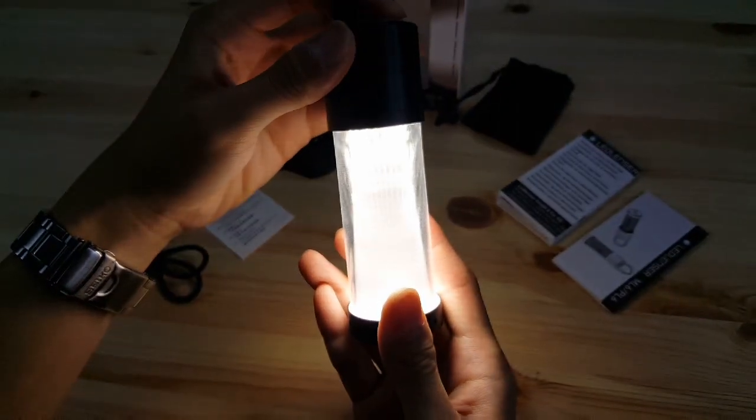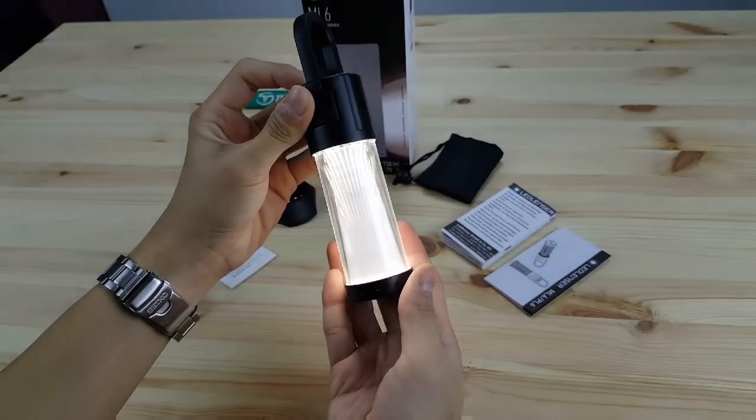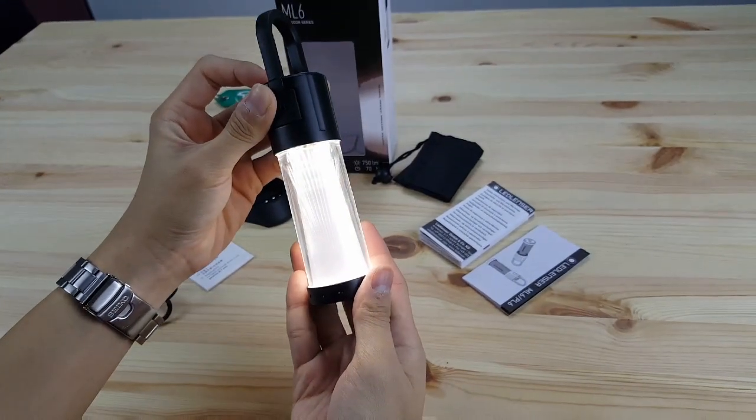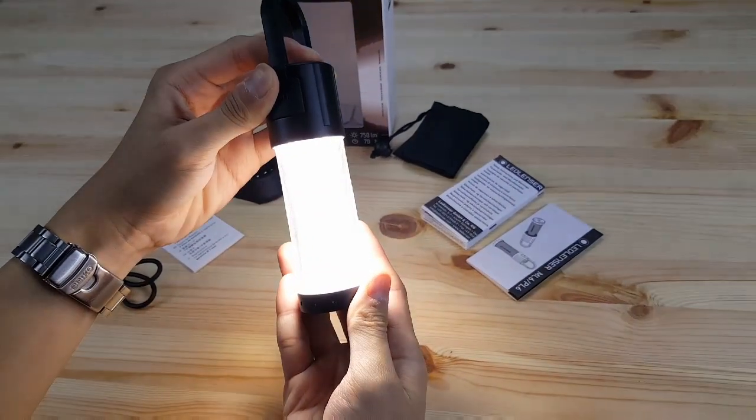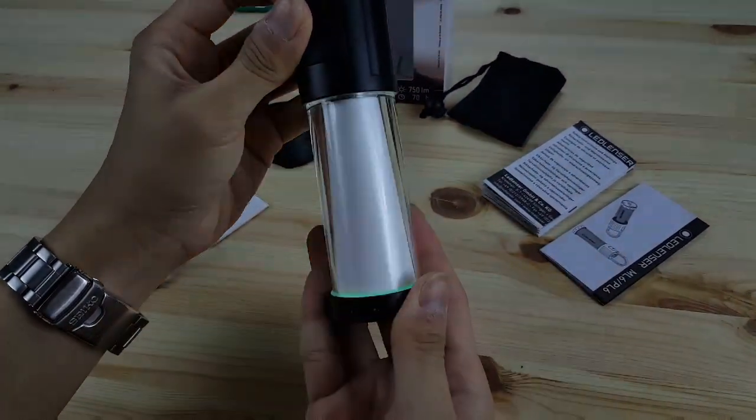You can cycle through the brightness. By pressing the plus, it gets brighter. By pressing minus, it will go dim.